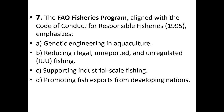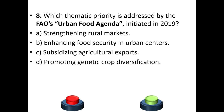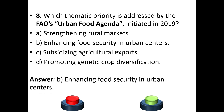Question 7: The FAO Fisheries Program, aligned with the Code of Conduct for Responsible Fisheries 1995, emphasizes: a) genetic engineering in aquaculture, b) reducing illegal, unreported, and unregulated fishing, c) supporting industrial-scale fishing, or d) promoting fish exports from developing nations. Question 8 answer: option B — enhancing food security in urban centers.